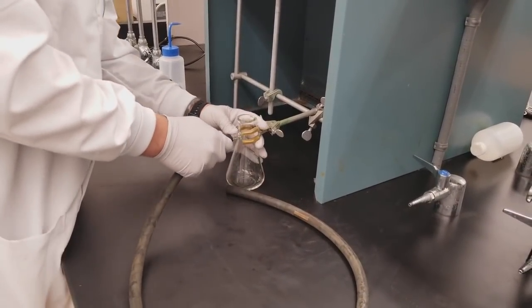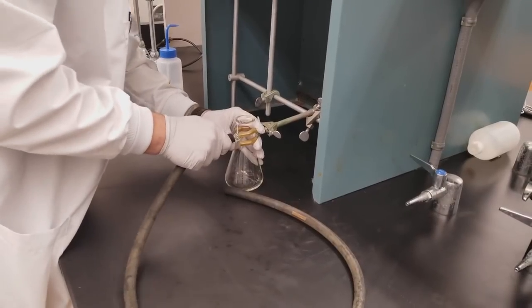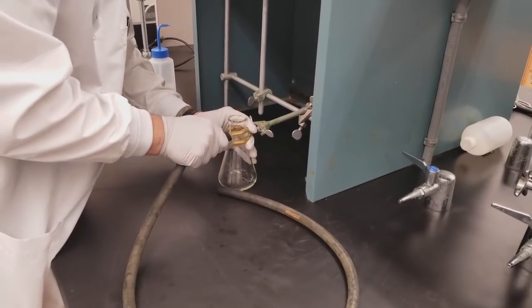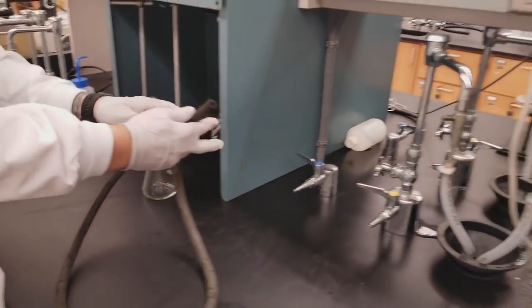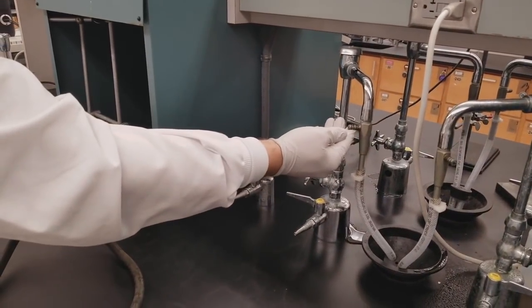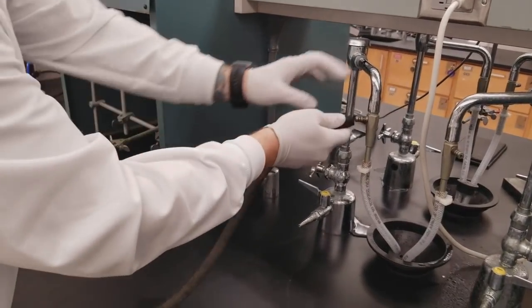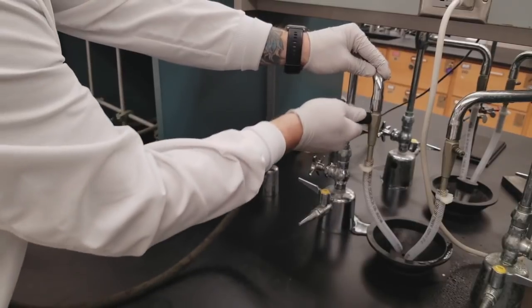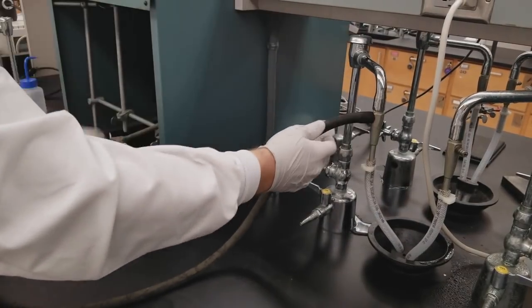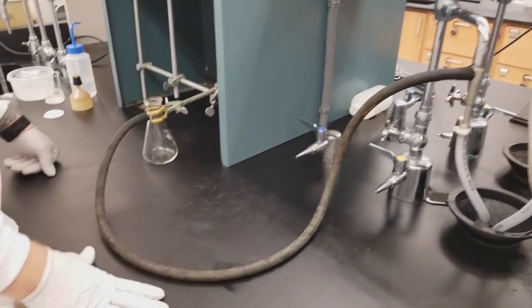So we're just going to attach that to the arm of the vacuum filtration flask and then the other end is going to go on to the water aspirator in the lab. So attach that to the water aspirator and then we're ready to go.